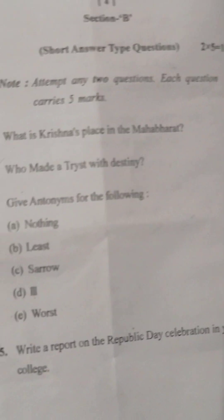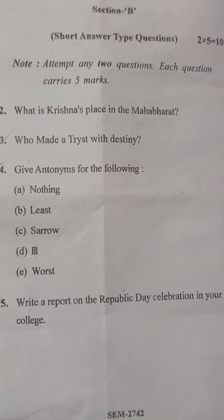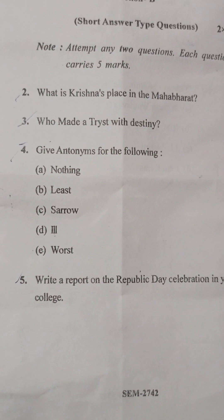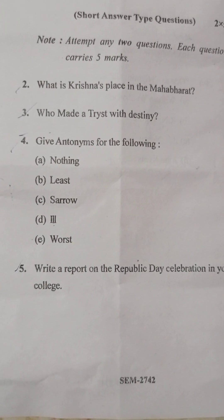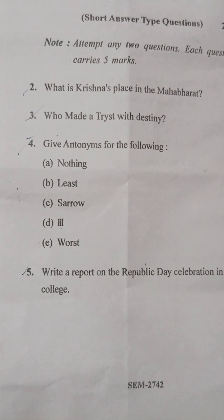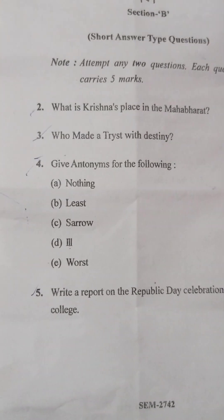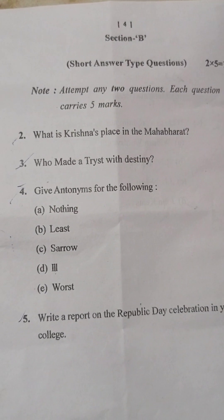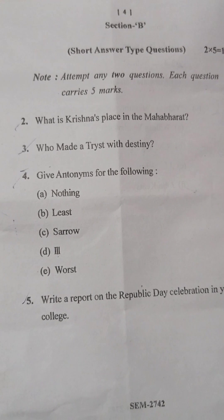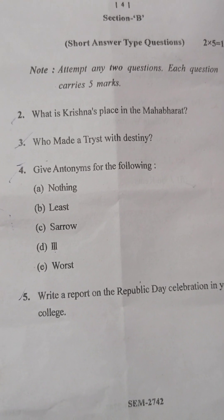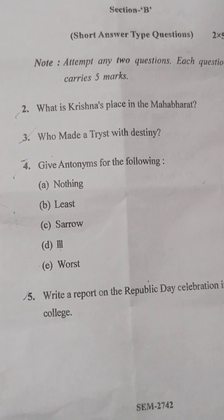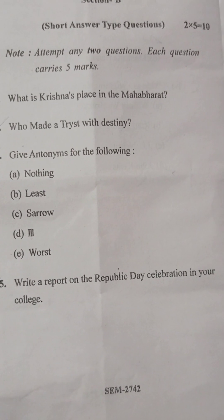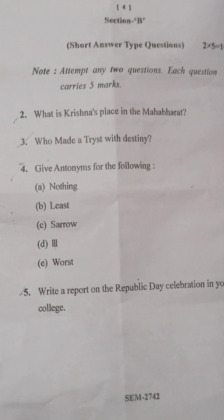In Section B, attempt any two questions. Each question carries five marks. There are four questions, out of which you have to attempt any two. What is Krishna's place in the Mahabharat? Who made Tryst with Destiny? And give antonyms: nothing–everything, least–most, sorrow–joy, ill–healthy, worst–best. Also, write a report on the Republic Day celebration in your college.